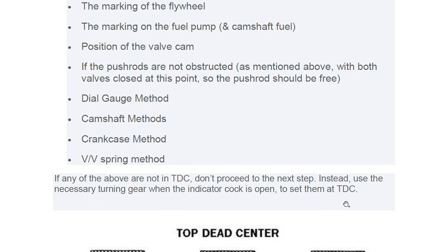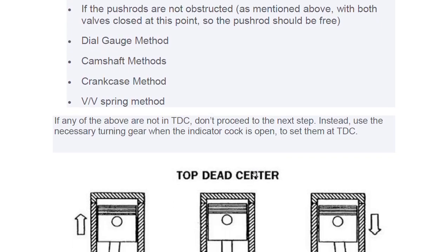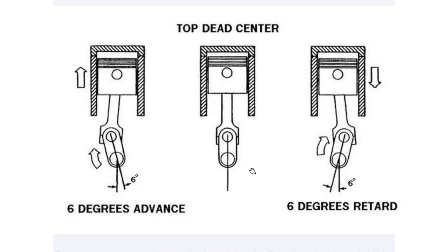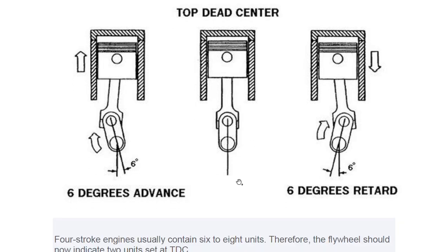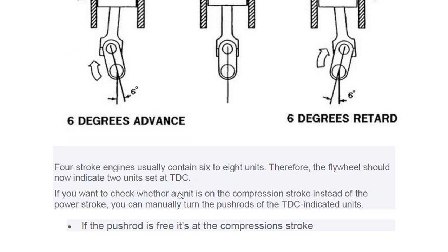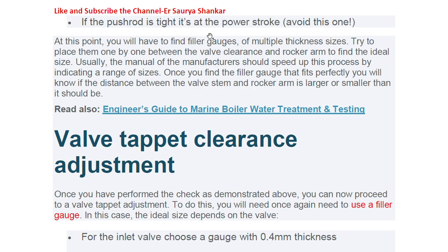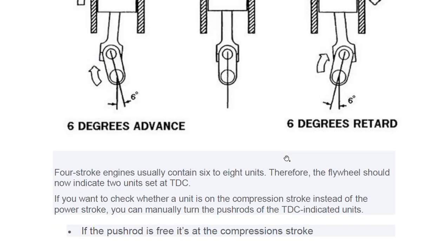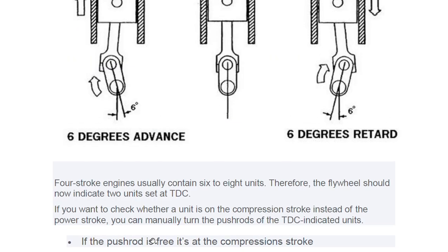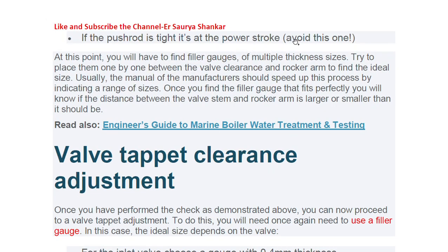TDC is typically set at six degrees advance and six degrees retard. A four-stroke engine usually contains six to eight units, so the flywheel may indicate two units set at TDC. To check whether a unit is on the compression stroke instead of the power stroke, manually turn the push rod of the TDC-indicated unit — if the push rod is free, it's at the compression stroke; if it is tight, it's at the power stroke — avoid the power stroke.